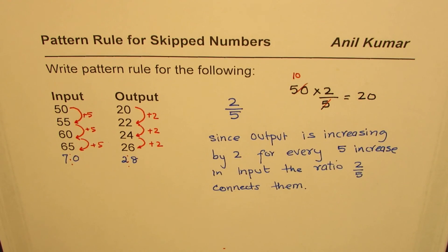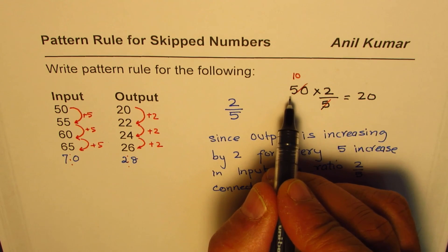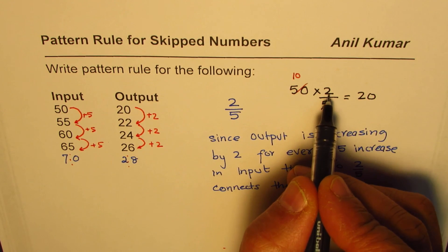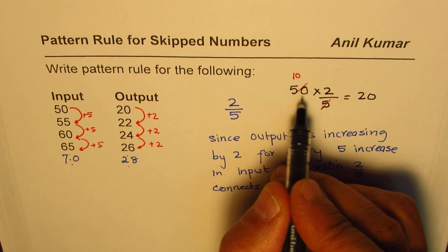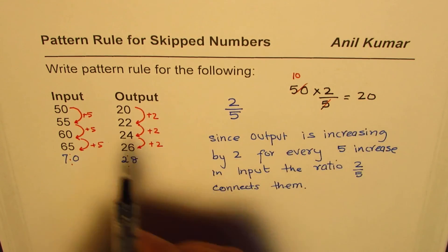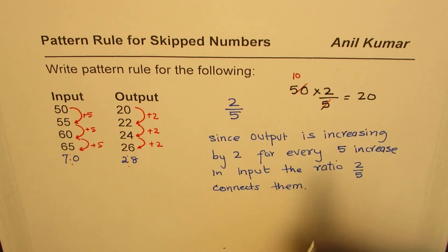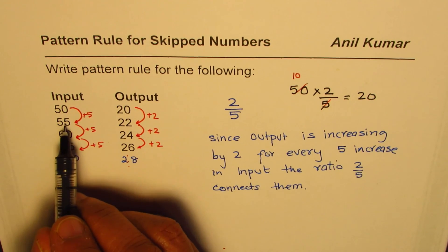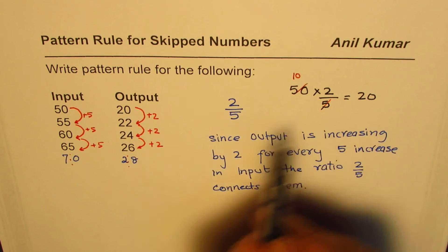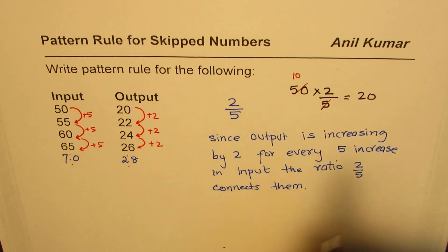So what we notice here is that if we divide 50 by 5 and then multiply by 2, or when we multiply 50 by 2 and divide by 5, we get the required output. We can test for others also. If I do 55 times 2 over 5, do I get 22? Yes I do. So we do get the pattern.